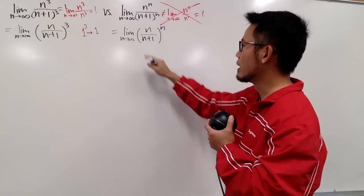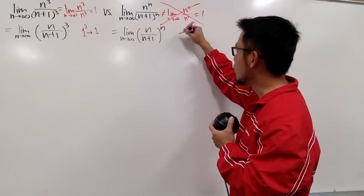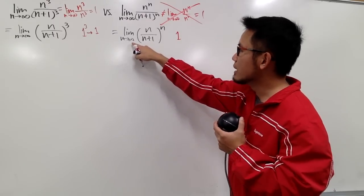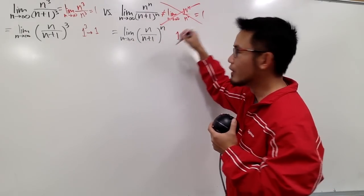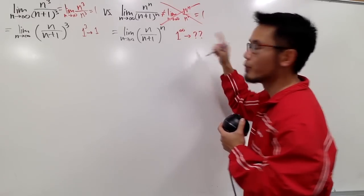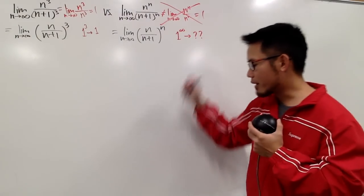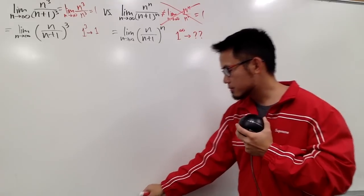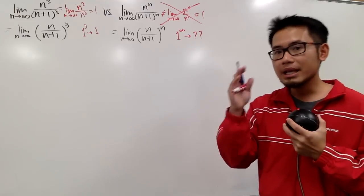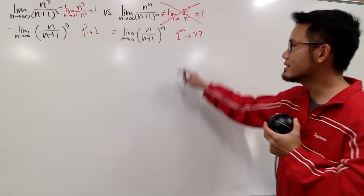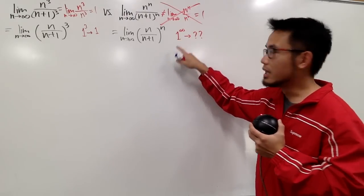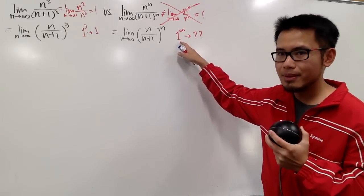However, for the second limit written as (n/(n+1))^n, the inner limit goes to 1, but the moment you plug in infinity for the exponent, we have the form 1 to the infinity. This is an indeterminate form — we don't know what it's going to be, and this causes a lot of trouble for students. You may wonder: isn't 1 to any power always equal to 1? Yes in computation, but this 1 is not exactly equal to 1 in the limit sense.